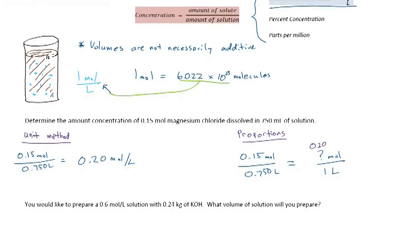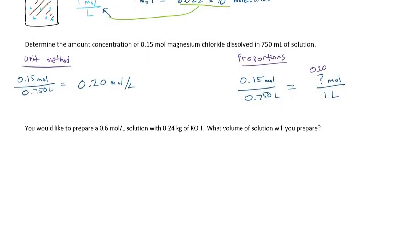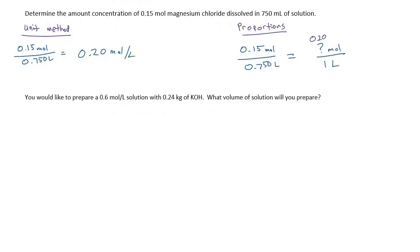So let's look at a second example that will be slightly more involved. You would like to prepare a 0.6 mole per liter solution with 0.24 kilograms of potassium hydroxide. What volume of solution will you prepare? So I'm first going to observe that what we're trying to get out of this is an answer that tells us how many liters or how many milliliters of volume. So I need to end up with liters as my final unit. And that's important to note when I use the unit method of solving this.